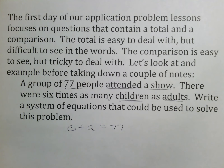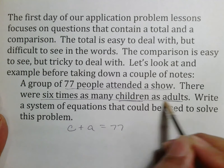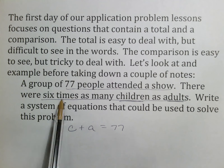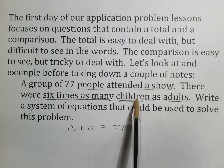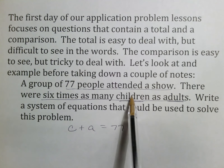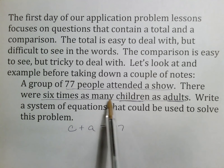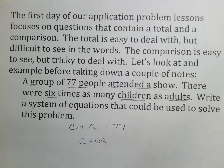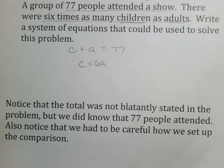The second equation comes from 'six times as many children as adults.' We know we multiply one variable by six. Since there are more children, the number of children equals six times the number of adults: c = 6a. You can just go in order — six times as many children as adults means c = 6a. Then substitute 6a in for c and solve. Notice the total wasn't blatantly stated, and the comparison had to be set up carefully.